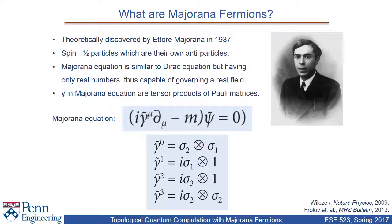First, let us understand what Majorana fermions are before understanding their application in quantum computation. Majorana fermions were first theoretically proposed by Majorana in 1937. He proposed the existence of spin-half particles which are their own antiparticles. Known spin-half particles such as electrons are not their own antiparticles. The Majorana equation is similar to the Dirac equation, which has complex solutions and describes spin-half particles such as electrons. The Majorana equation predicts the existence of spin-half particles described only by real wave functions, and thus are their own antiparticles.